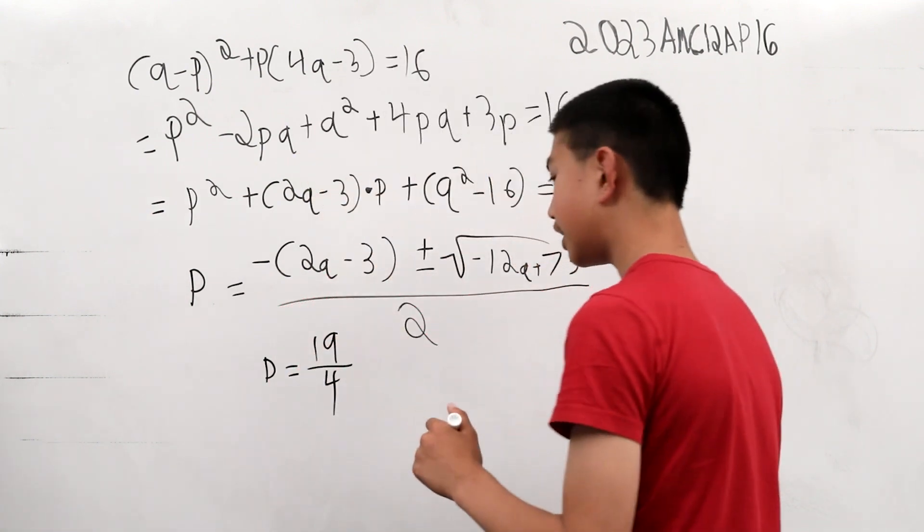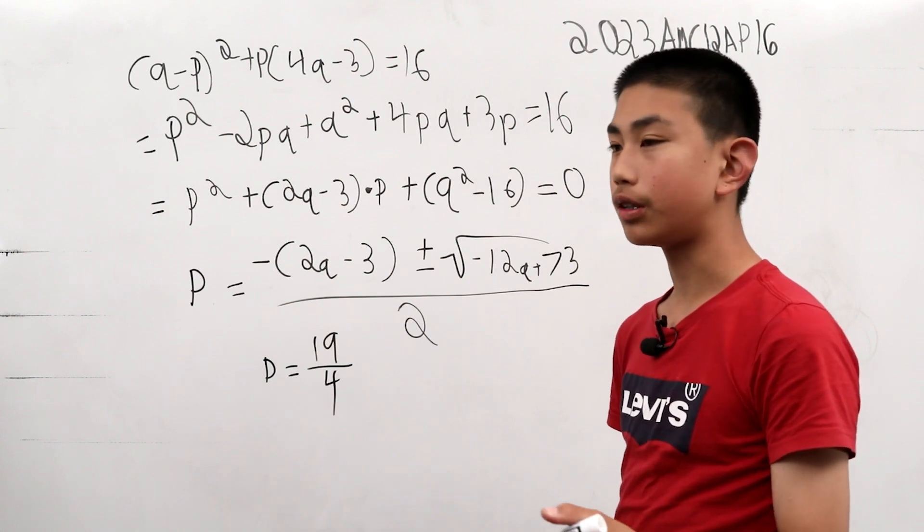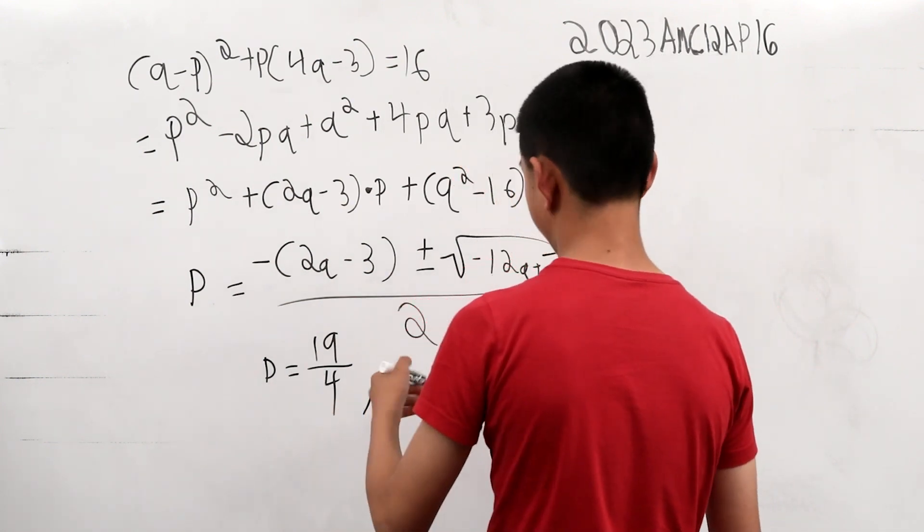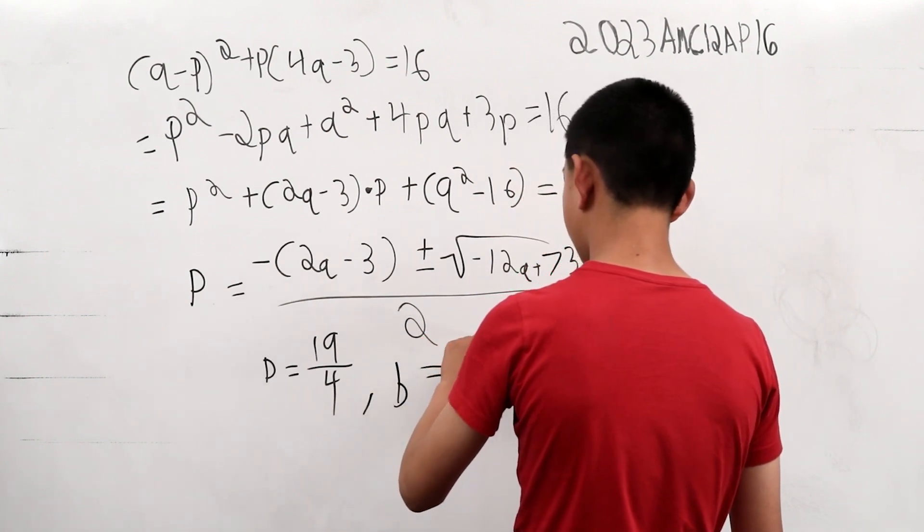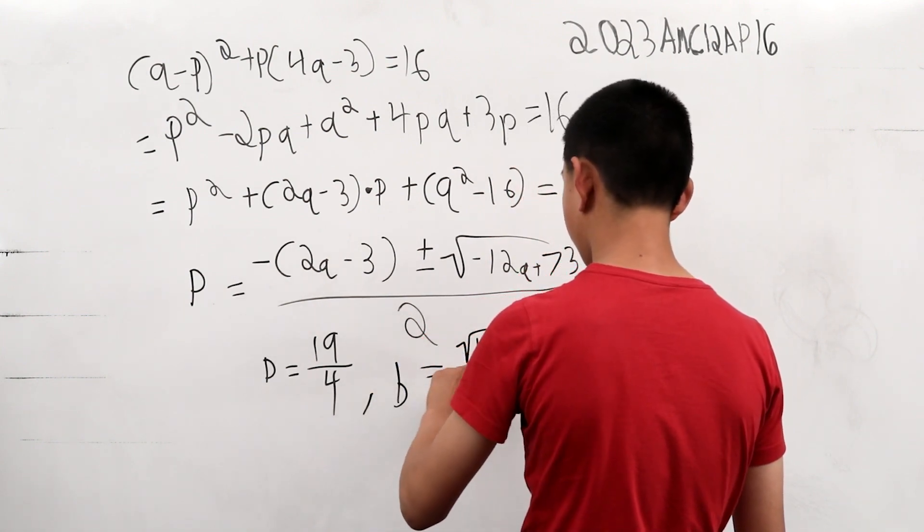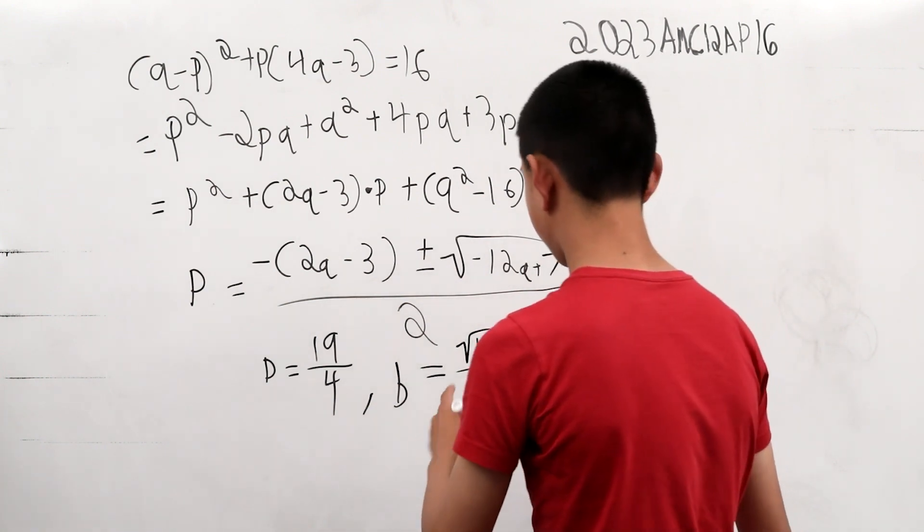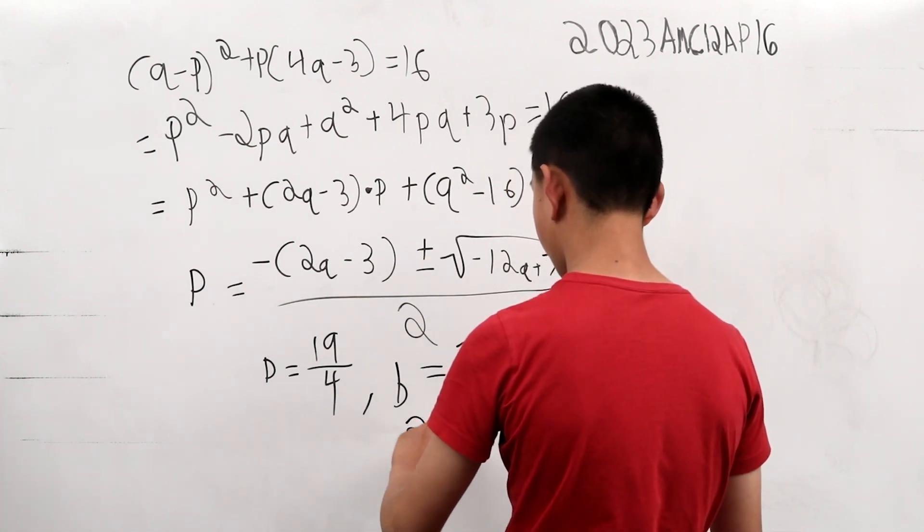But, we know that p, we made p equal to b squared, so we have to square root it to get our answer of b. So, our answer of b is square root 19 over 2, and we want the sum of these two numbers. So, 19 plus 2 is 21, our answer.